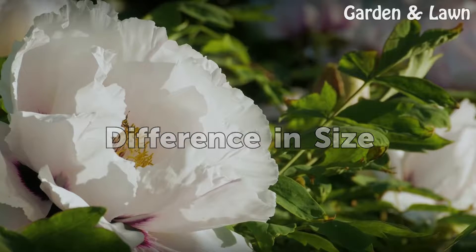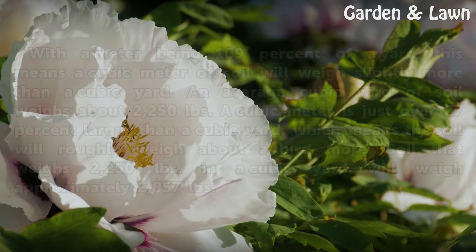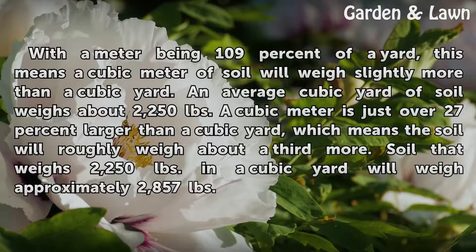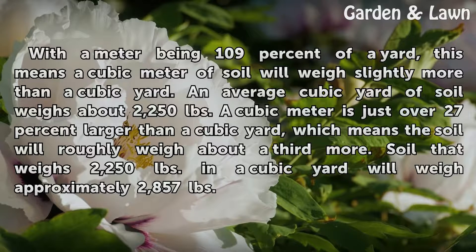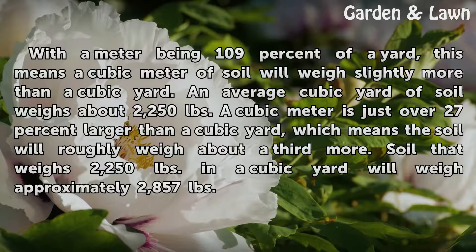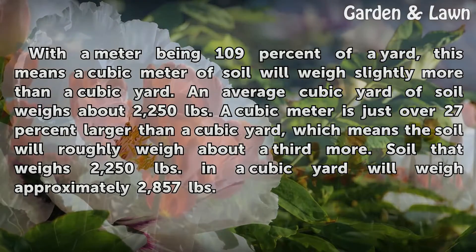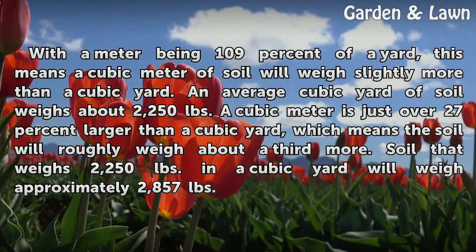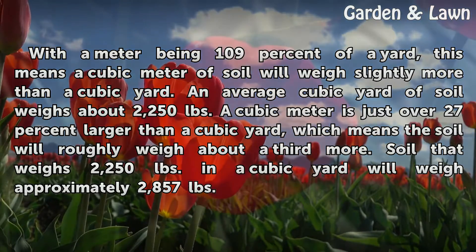Difference in Size: With a meter being 109% of a yard, a cubic meter of soil will weigh slightly more than a cubic yard. An average cubic yard of soil weighs about 2,250 pounds. A cubic meter is just over 27% larger than a cubic yard, which means the soil will roughly weigh about a third more — approximately 2,857 pounds.